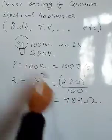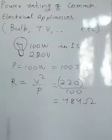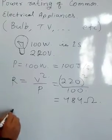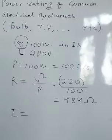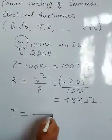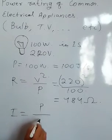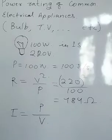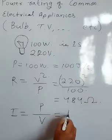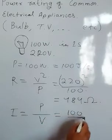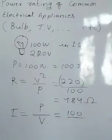Similarly, you can find how much current is flowing through this bulb. We know the formula in terms of power and voltage: I = P/V. Power is 100 watt and voltage is 220 volt.